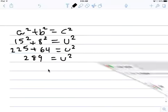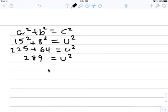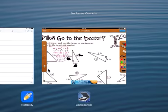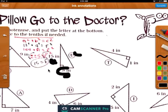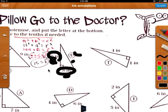So, 289 equals 17. So, our answer is 17. The square root. The square root is 17 equals to U. So, this side U is 17. Notice this is 8. And U is 17.